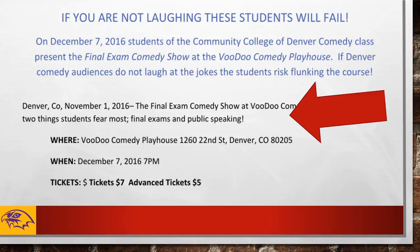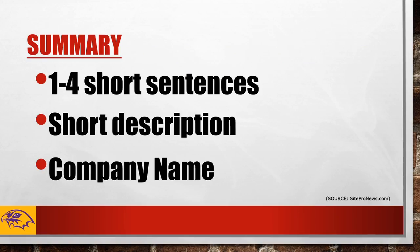The next part of your press release is the summary. Public relations leaders know that the summary is important because the content can be used by newspapers, blogs, and websites. Your title and summary help generate exposure. A good summary paragraph is one to four short sentences, a quick synopsis or short description, and uses your company name or the title of your show. In this press release, we're going to add our show details.